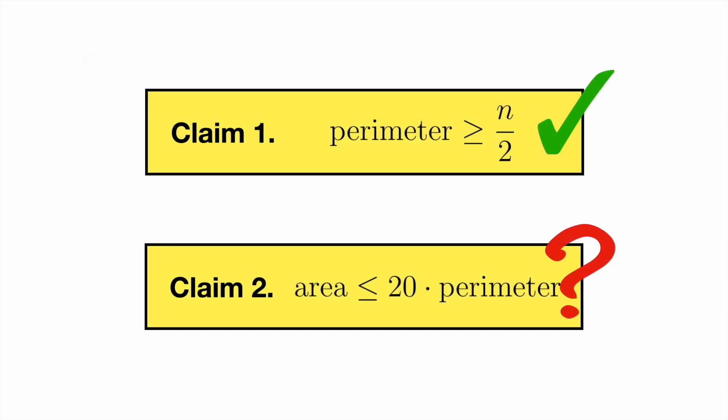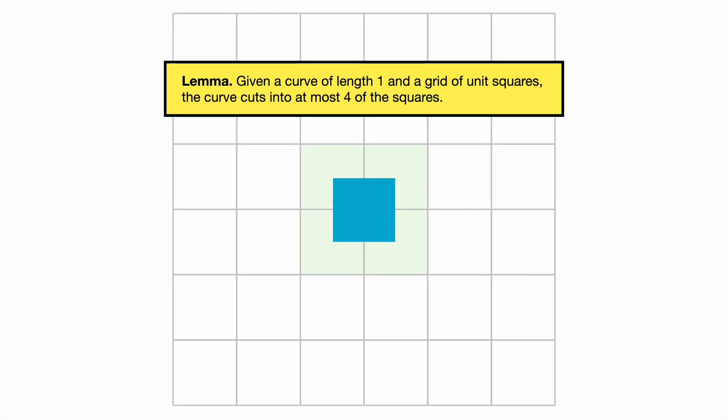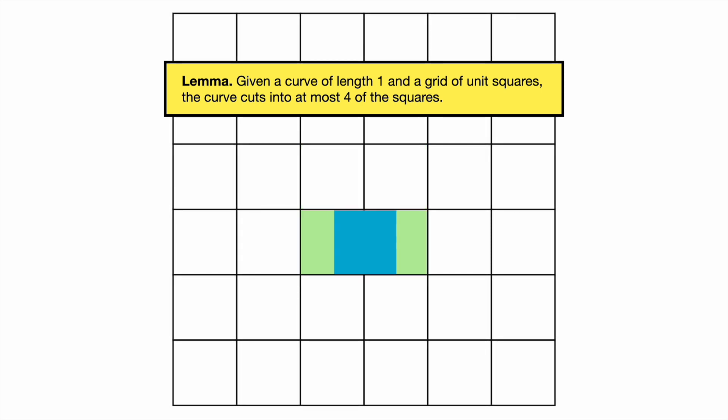Next, we prove claim 2. Let's break this down into some simpler facts. First, if we have a grid of unit squares, then a curve of length 1 will cut through at most 4 of those squares. To see this, take any curve of length 1 and consider the smallest axis-aligned rectangle containing it. Since the curve is unit length, the width and height of this rectangle are both at most 1. That means we can fit our curve in a unit square. No matter where we position this square, it always touches at most 4 of the grid's squares, and those are the only squares the curve can possibly cut through.